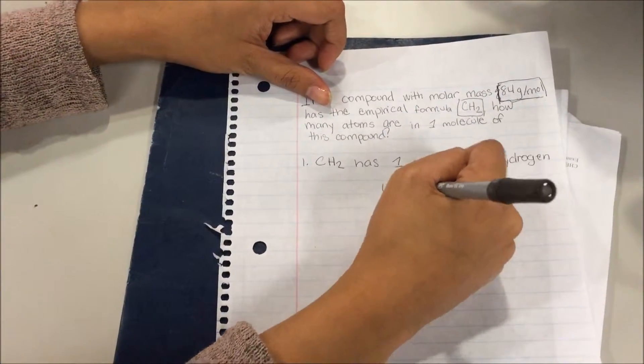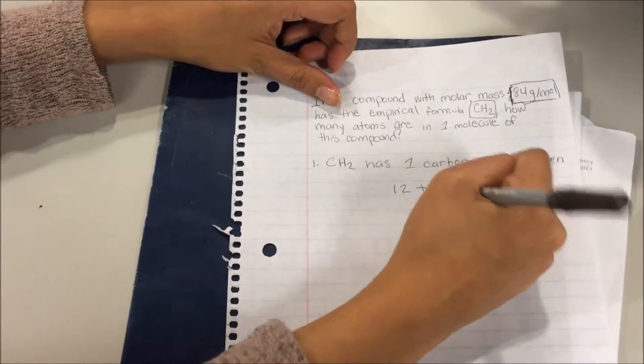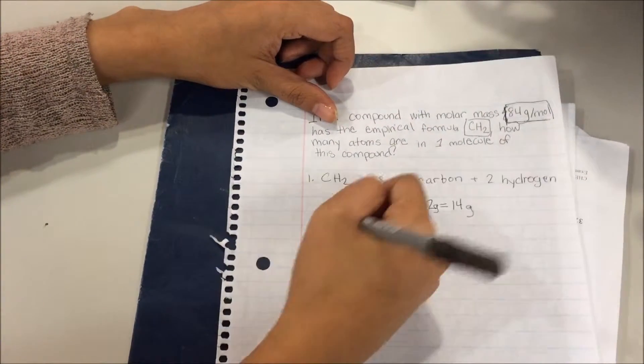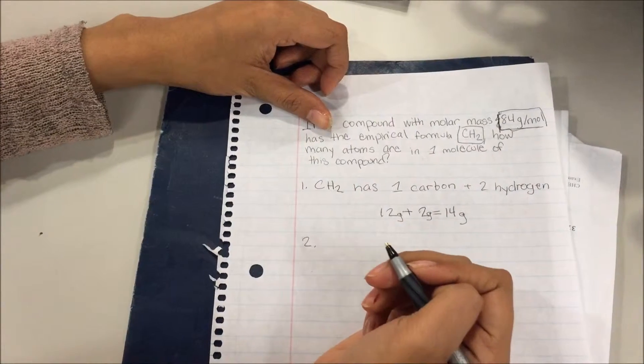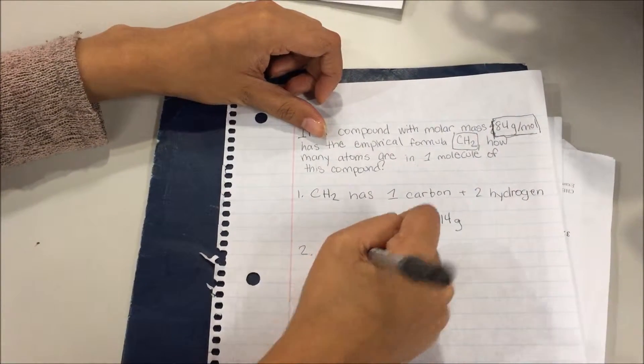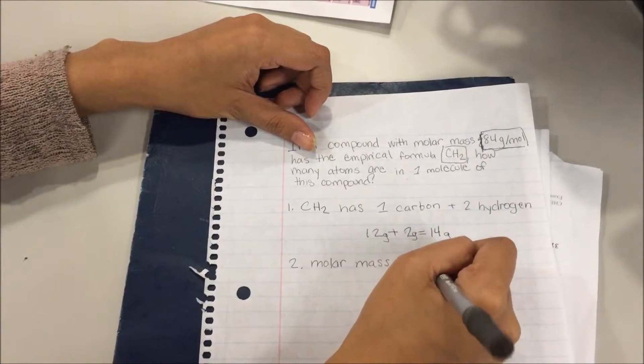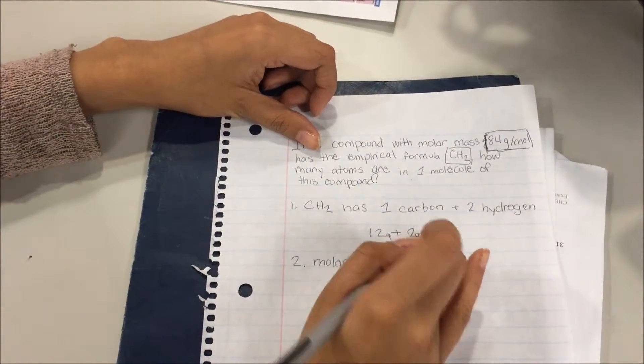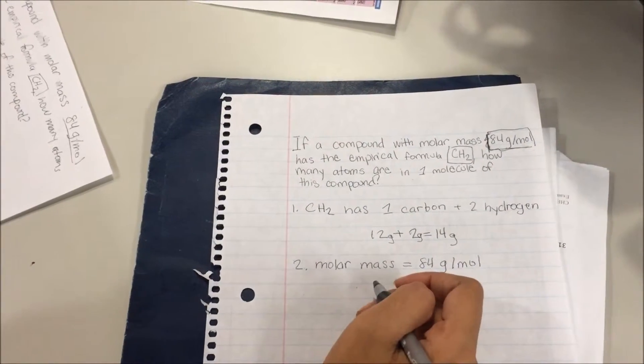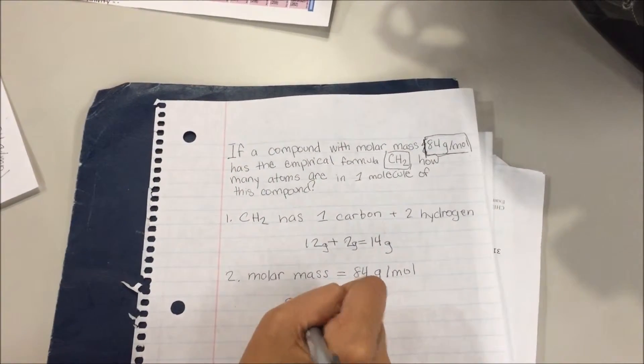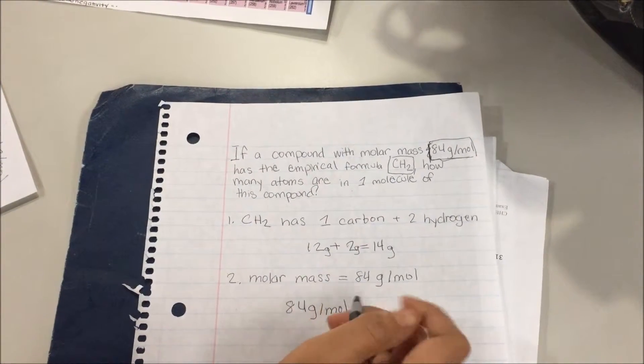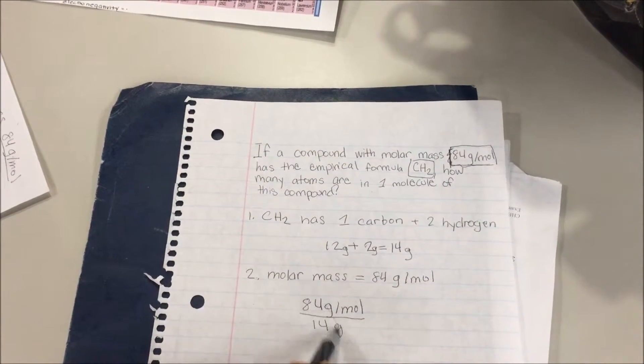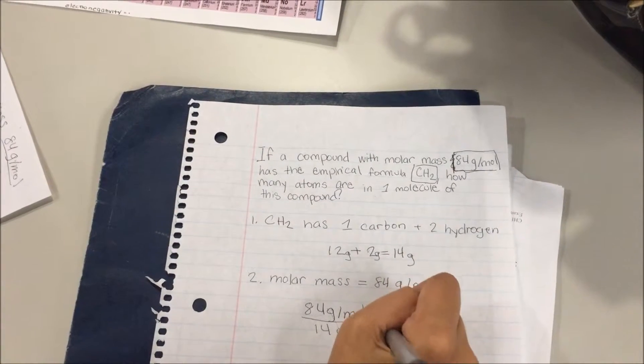1 carbon plus 2 hydrogen is equal to 14. 12 grams plus 2 grams equals 14 grams. Next, we know that the molar mass is 84 grams per mole, so we divide that by that to get the moles. So it's 84 grams per mole divided by 14 grams. These grams and grams are going to cancel out to get the moles, and we get 6 moles.